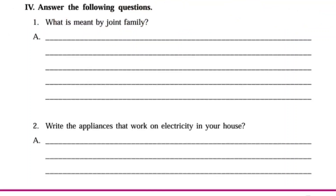And fourth one — Answer the following questions. First one: What is meant by joint family? A family with grandparents, parents, uncles, aunts, and cousins is called a joint family.